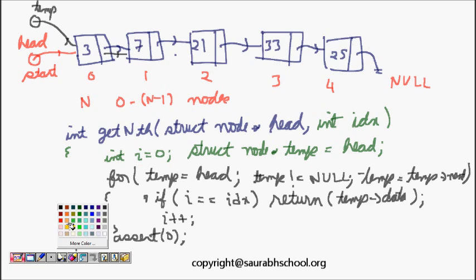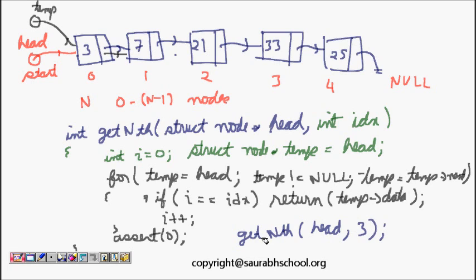Let's do some dry run. I call getNth with head and 3. What will happen? Let's see the code here. It will go to this place. i is equal to 0 initially. Struct node star temp is equal to head, so temp becomes equal to head. If i, which means 0, is equal to 3, which is not true, so it will not execute this line. It will do i++, so i is now 1. So it comes here. Now temp is equal to temp next, so temp comes here.